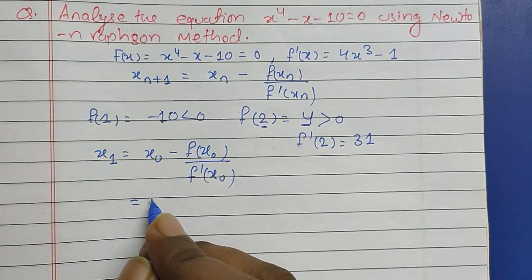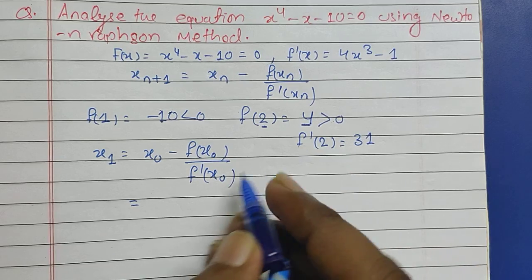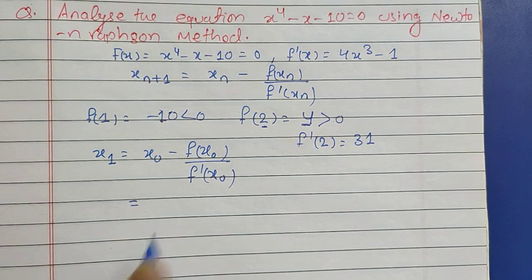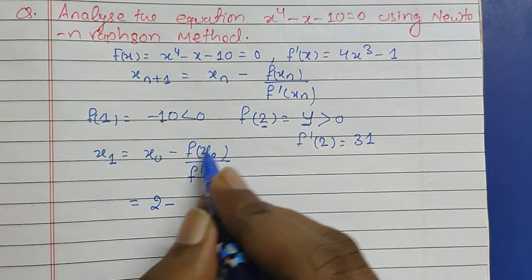Return the value here, then this is going to be x_0, x_0 is 2 minus f(x_0) means f(2).